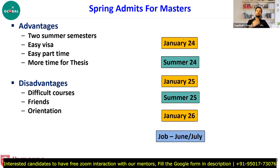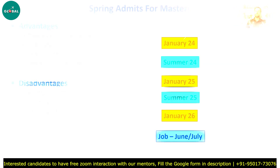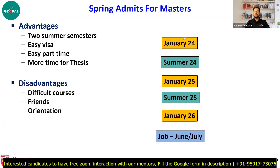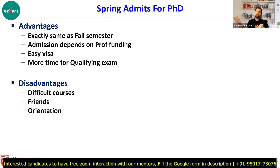Seniors will tell you which courses to avoid because they are too advanced, and which courses are easier. Some students don't take course selection seriously enough. If you want to apply in spring semester, talk to your PDA mentor. That covers the main points for master students.